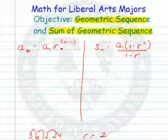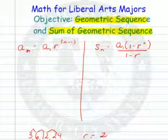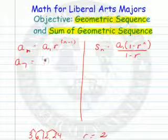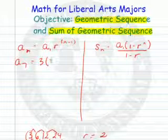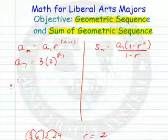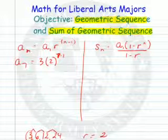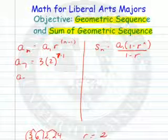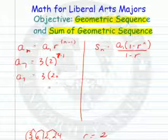Here's our formula for a particular term. So let's find the 7th term of this sequence. So a sub 7 would equal a sub 1, which is my 3, times r, that's 2, the ratio in this case, to the n minus 1 — that would be 7 minus 1. So a sub 7 would be equal to 3 times 2 to the 6th.